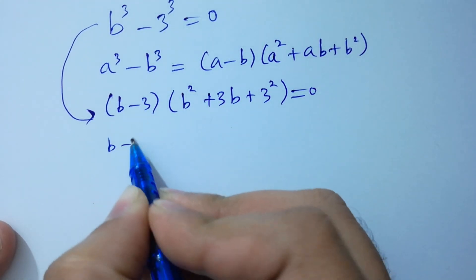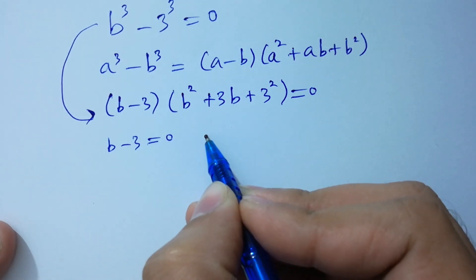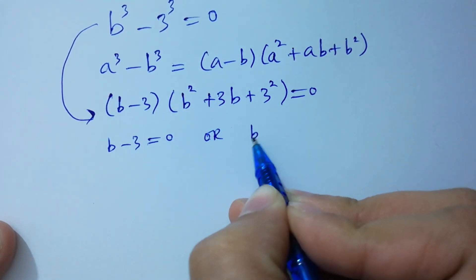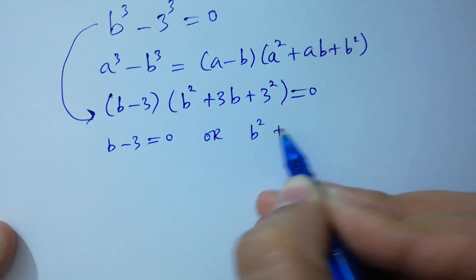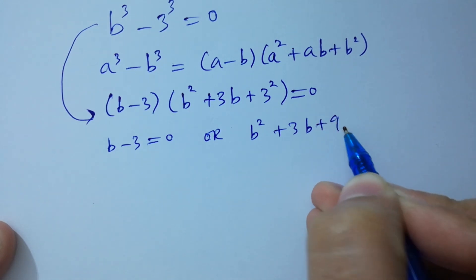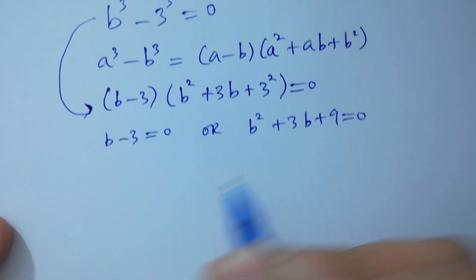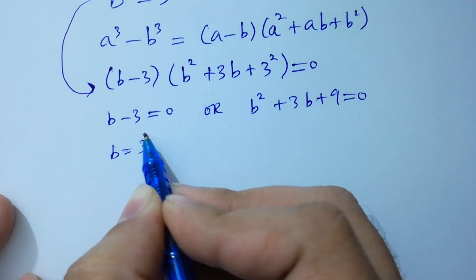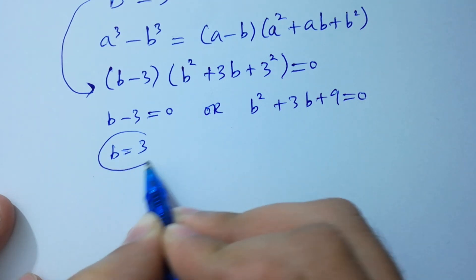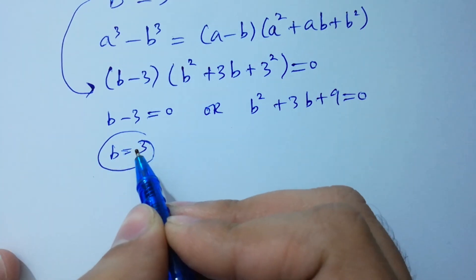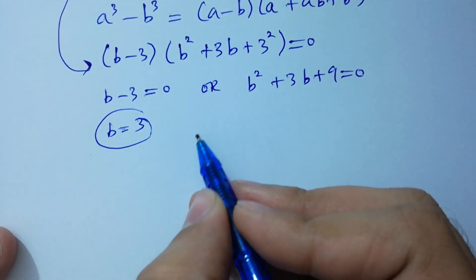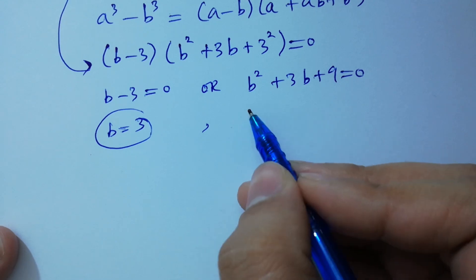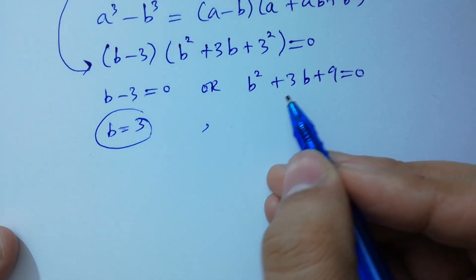Either B minus 3 equals 0, or B squared plus 3B plus 9 equals 0. So B equals positive 3, which is our 4th solution, and the second part is again a quadratic equation.